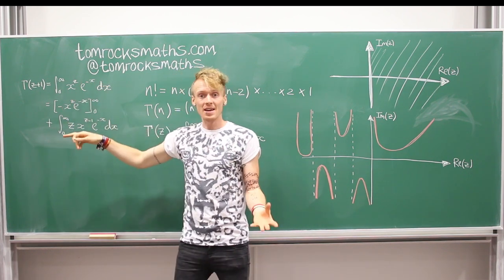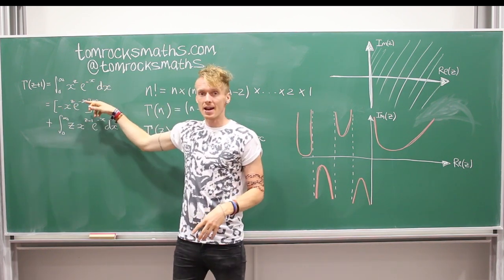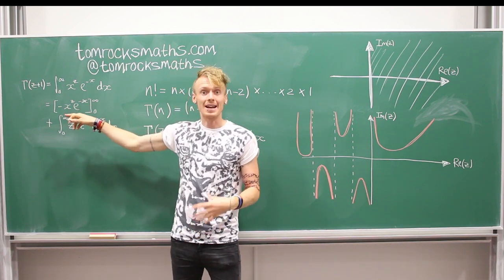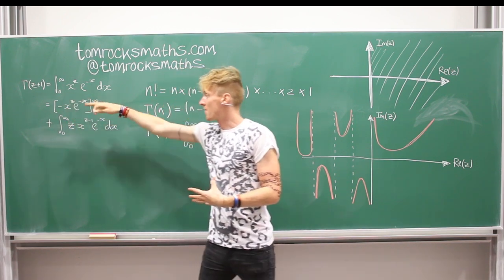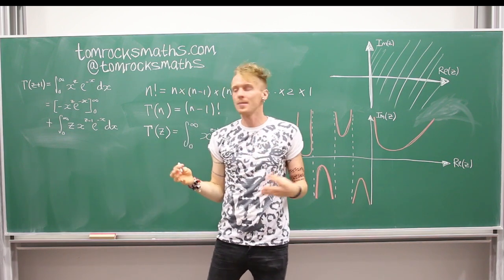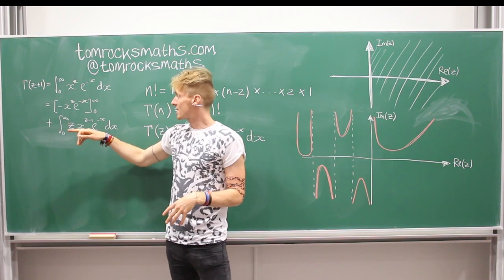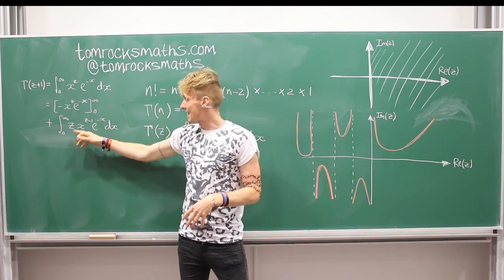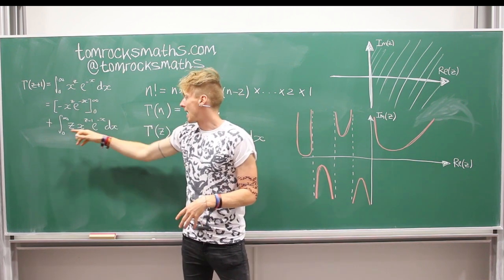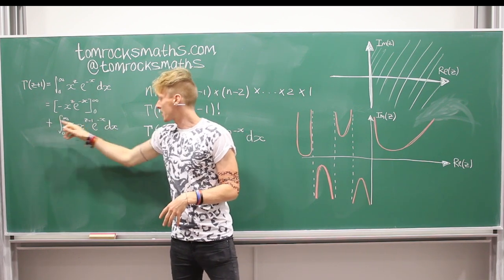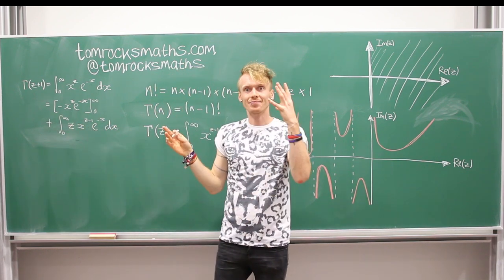Our e to the minus x will be our dv. And so integrating this, we get our v, which is minus e to the minus x, and then our u x to the z goes inside the evaluation of limits part. And then for the integral that we're left with, we have the derivative of x to the z is z x to the z minus 1, and your minus minus becomes plus e to the minus x.